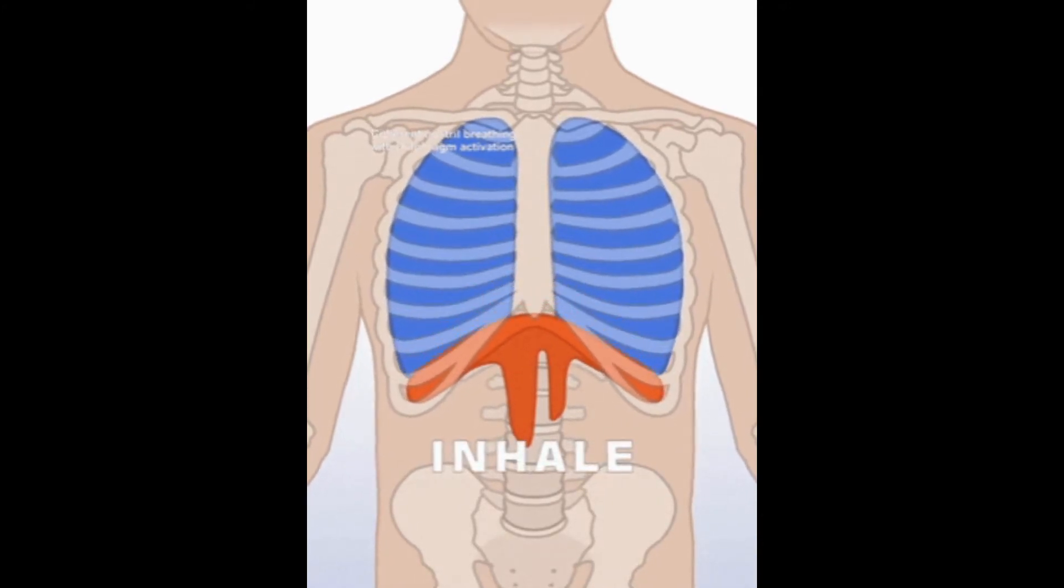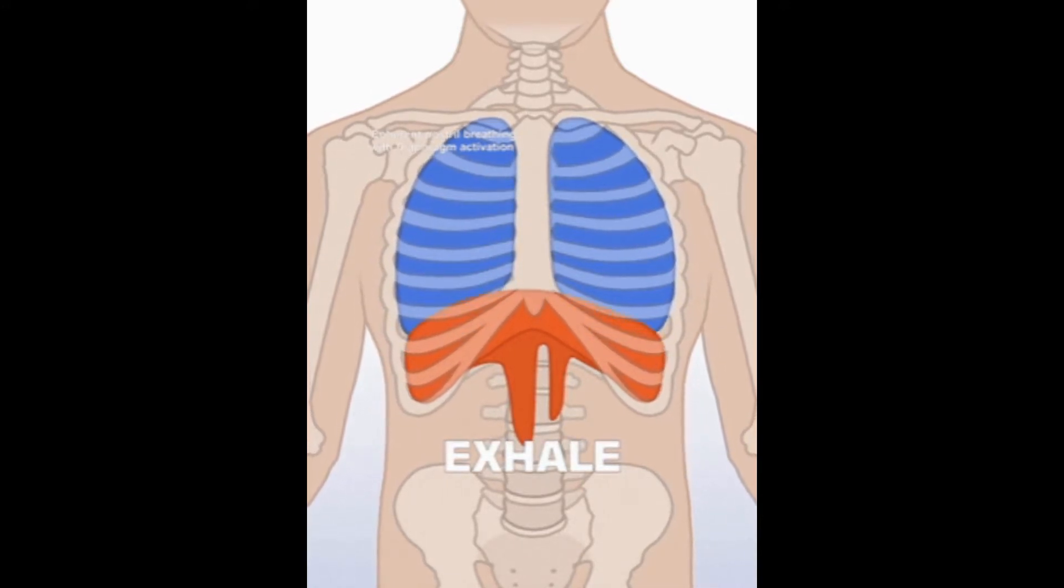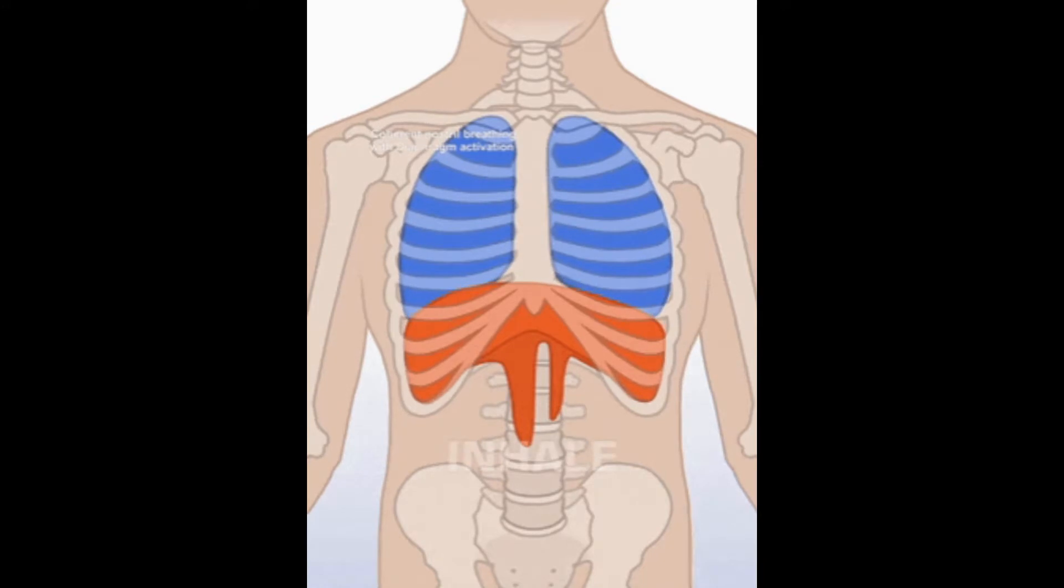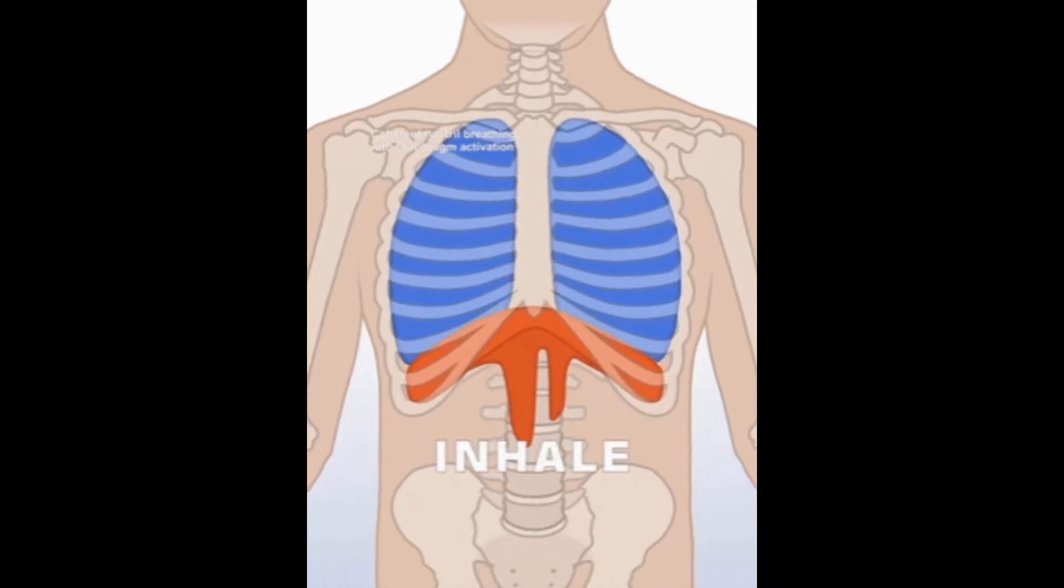The ventral group of neurons are located in the ventral lateral part of the medulla oblongata and sends signals for both inspiration as well as expiration.